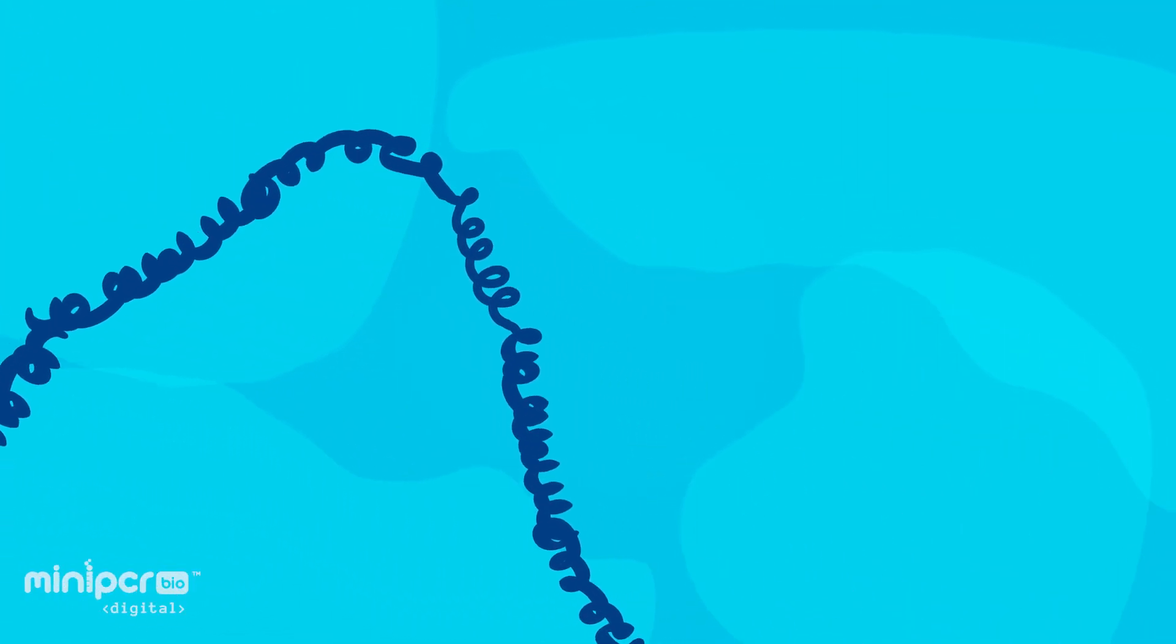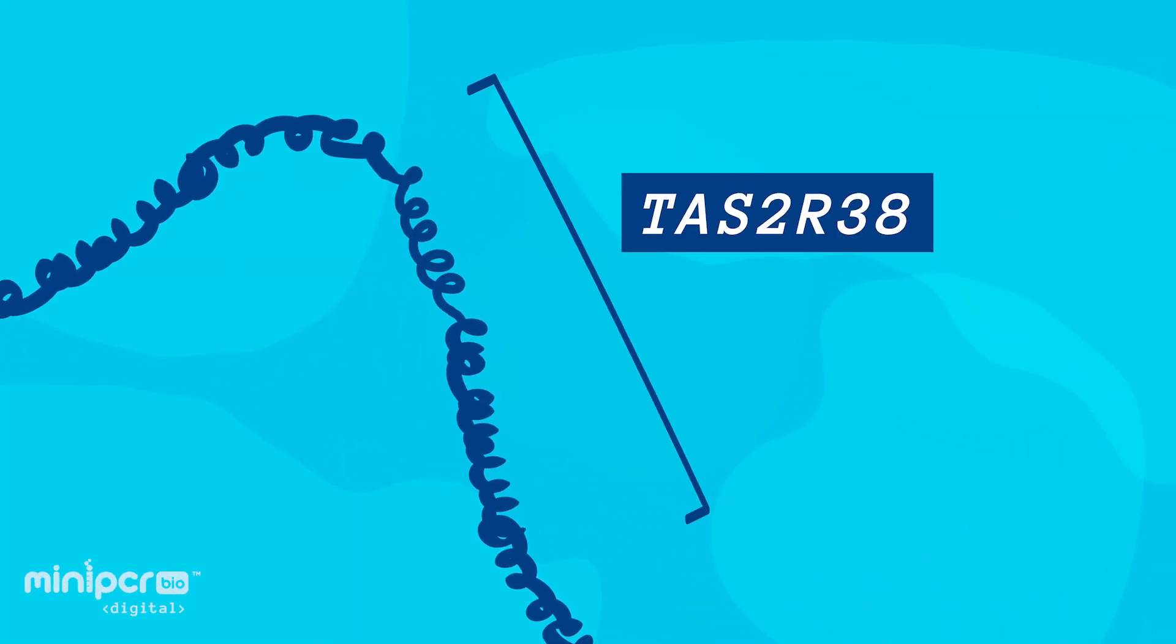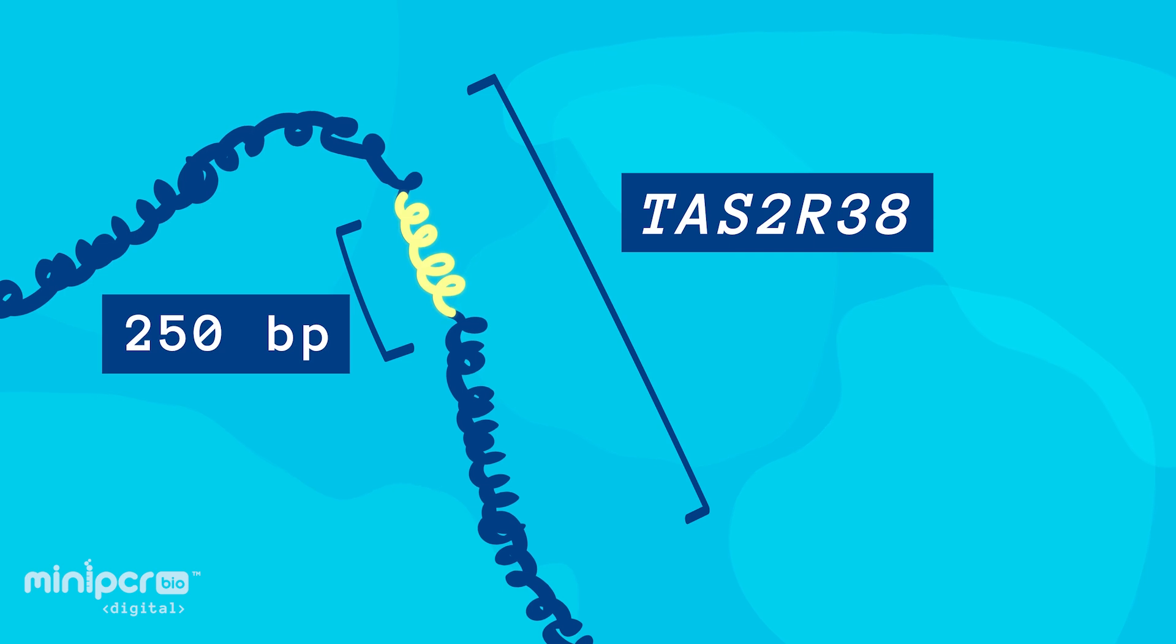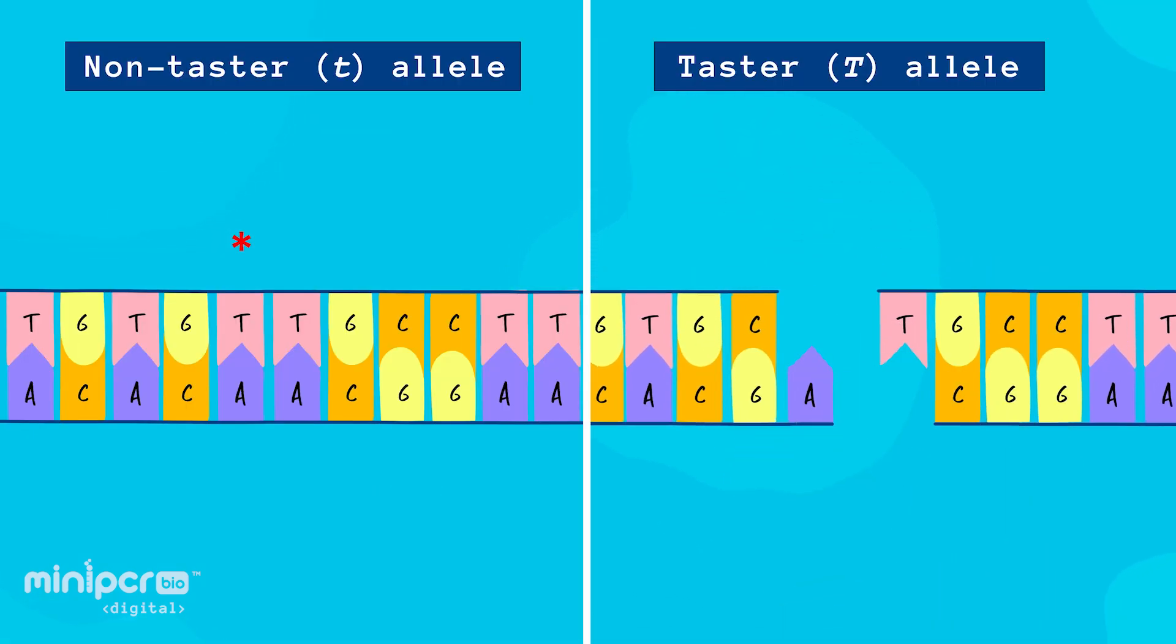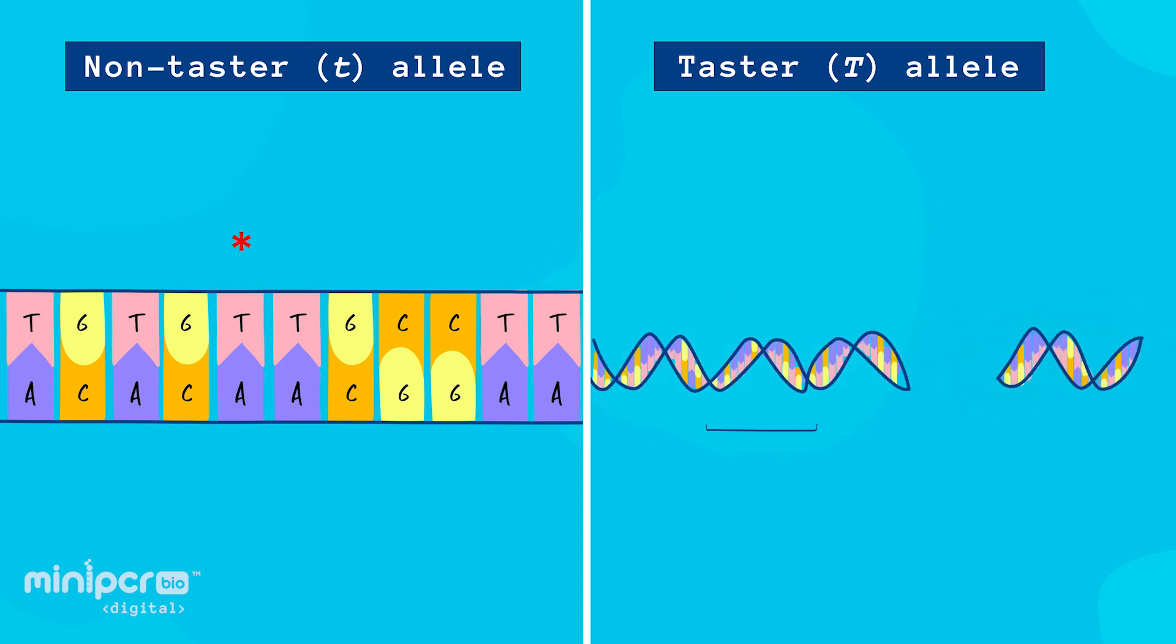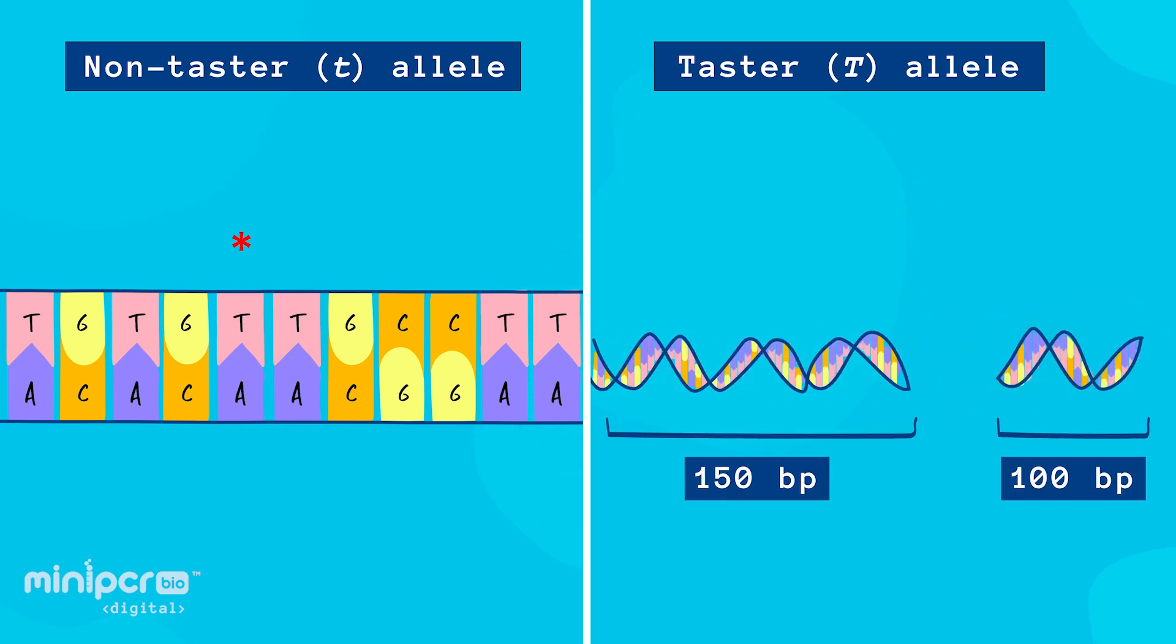During the lab, you used PCR to amplify a 250 base pair section of the TAS2R38 gene. Then you added a restriction enzyme that cuts only the taster allele into two fragments, a 150 base pair fragment and a 100 base pair fragment.